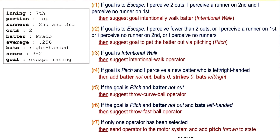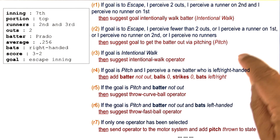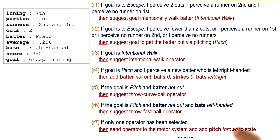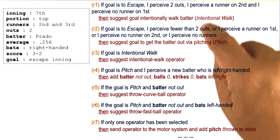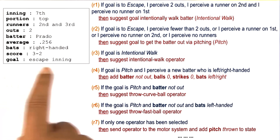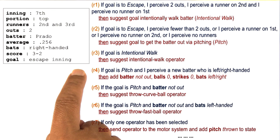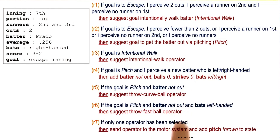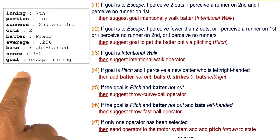Earlier we had said that knowledge-based AI, cognitive systems, use a lot of knowledge. And you can see how detailed and specific this knowledge is. In fact, the knowledge is so detailed and specific that in principle we can hope that, as different percepts come from the world, some rule is available that will be useful for that set of percepts.